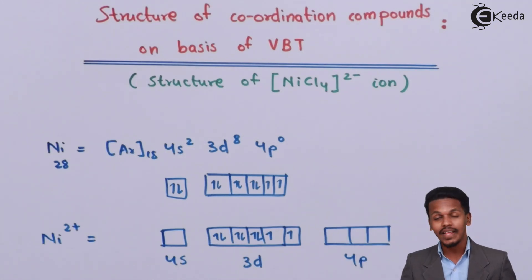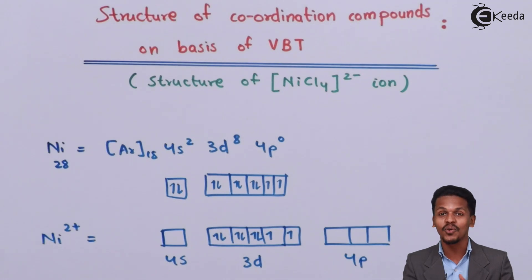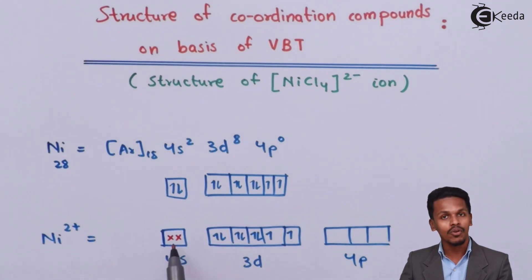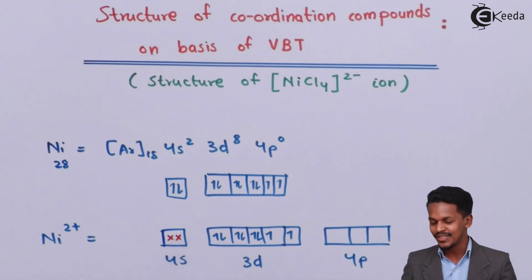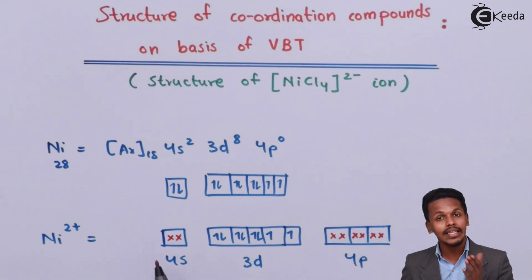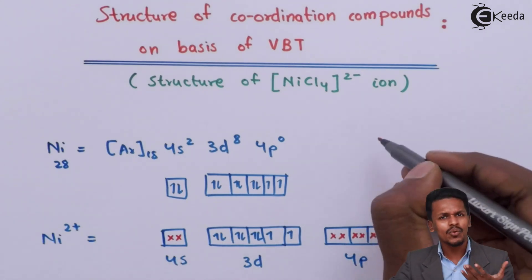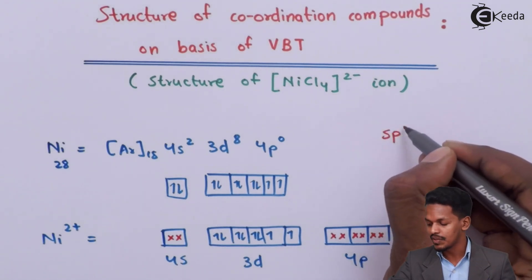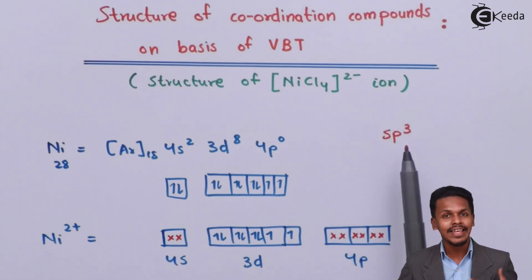The ligands are those which donate a lone pair of electrons to the metal, as discussed in the salient features of VBT. Each chlorine atom donates its lone pair into one of the vacant orbitals — one chlorine approaches the 4s orbital, and the 2nd, 3rd, and 4th fill the 4p orbitals. This gives the central metal atom sp³ hybridization.